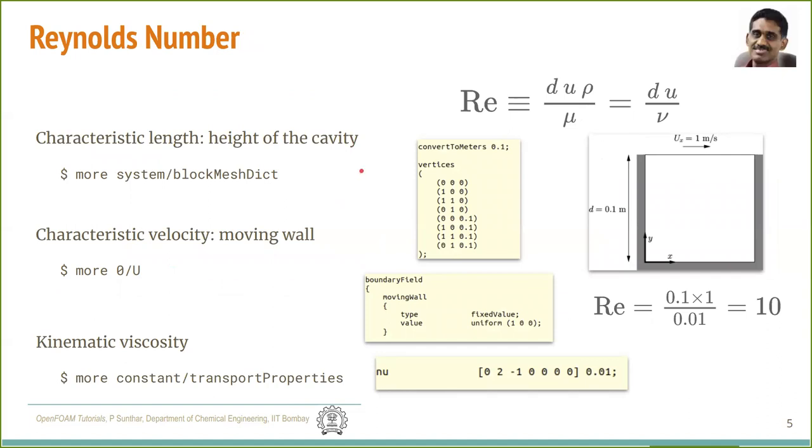We know that the Reynolds number is defined as d u rho by mu or d u by nu, where nu is the kinematic viscosity. To find the Reynolds number, we need the characteristic length. Here, the characteristic length could be either the width or the height of the cavity. Inspecting the blockMeshDict file, we see from the vertices that the height and width are 1 unit each. However, this is also multiplied by a factor 0.1 to convert this to meters. Therefore, the height is 0.1 meter.